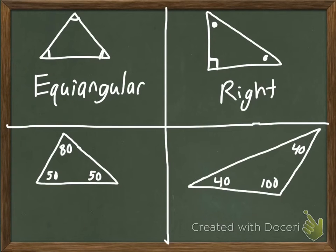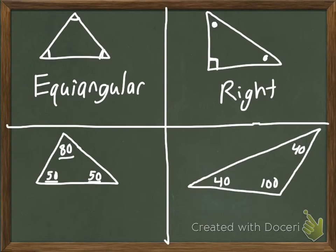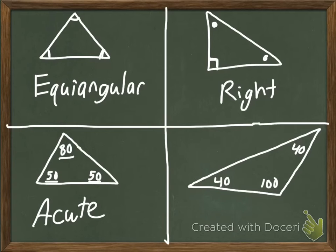That just leaves us with acute and obtuse. Acute means the angle is under 90 degrees; obtuse means the angle is over 90. In the lower left, we see degree measures of 80, 50, and 50 — all three are acute angles, so this is an acute triangle. Lastly, in the bottom right, we see one angle greater than 90 degrees, making this the obtuse triangle.